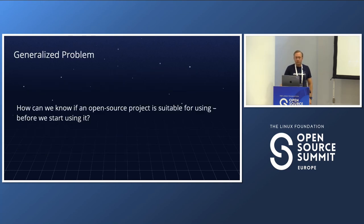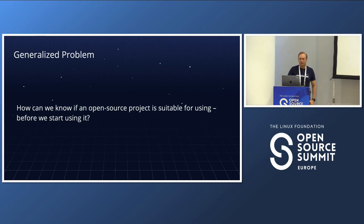The question is whether we could have detected this change — this diminishing of the Flask REST Plus project — early on and switched earlier. If we want to generalize, the question is: how can we know if an open source project is suitable for use before we start using it at all?